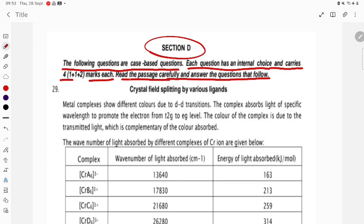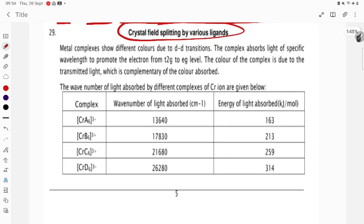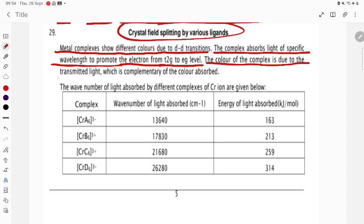The first one is crystal field splitting by various ligands. Metal complexes show different colors due to d-d transition. The complex absorbs light of a specific wavelength to promote the electron from t2g to eg level. The color of the complex is due to transmitted light, which is complementary to the color absorbed.